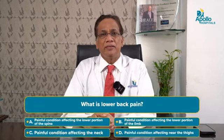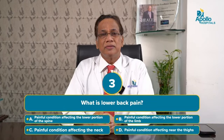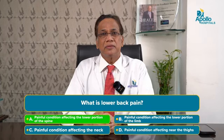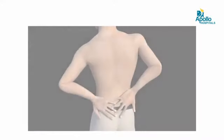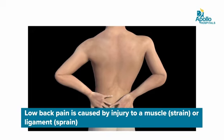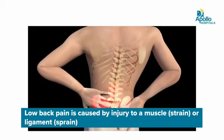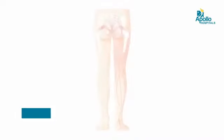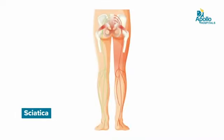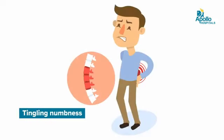90% of the population will have back pain at some point during their lifetime. Lower back pain is pain in the back above the waist. Sometimes it radiates to the lower limbs. It may be associated with leg pain, which is called sciatica, and sometimes it may be associated with tingling and numbness.